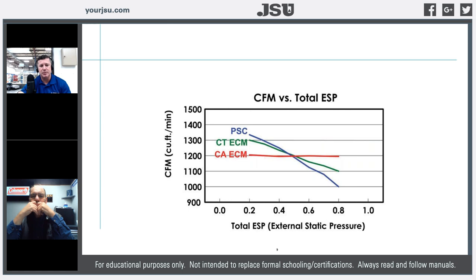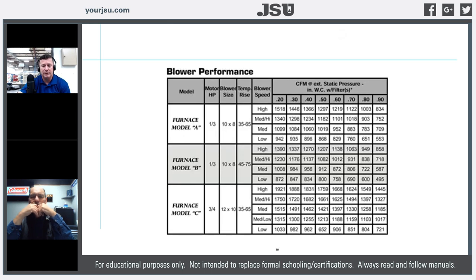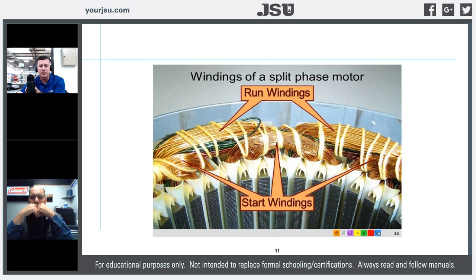Looking at the differences between ECM and PSC motors, we can track static pressure effects and see how much force is being exerted on that capacitor. A lot of problems in the field with capacitor failures are based on PSC motors being used in applications with high external static pressure. As we increase the load on that motor, we increase resistance across the capacitor, increase electron flow, and ultimately increase heat on that capacitor.